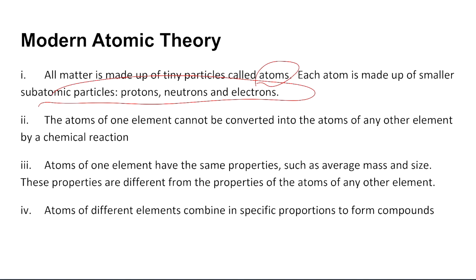Atoms of one element cannot be converted into another of any other element by chemical reactions. Chemical reactions will not allow one atom to convert into something else. That is a whole different type of chemistry called nuclear chemistry, but it's not normal chemical reactions. Atoms of one element have the same properties, such as average mass and size, which wasn't known back in Dalton's time. And lastly, atoms of different elements combine in specific proportions to form compounds. So different compounds like H2O, CO2, etc.